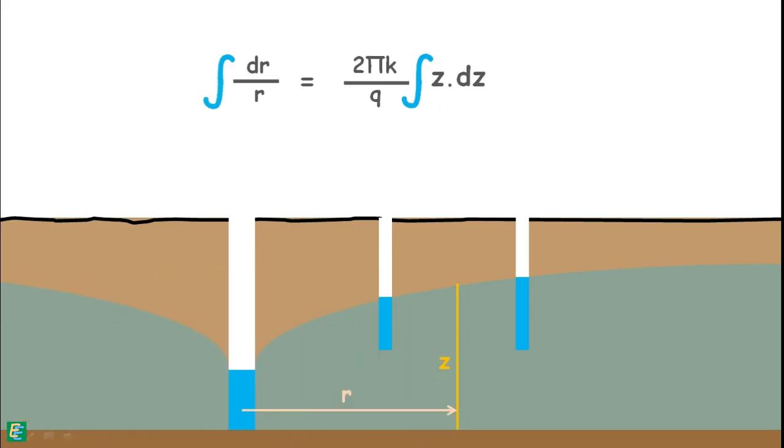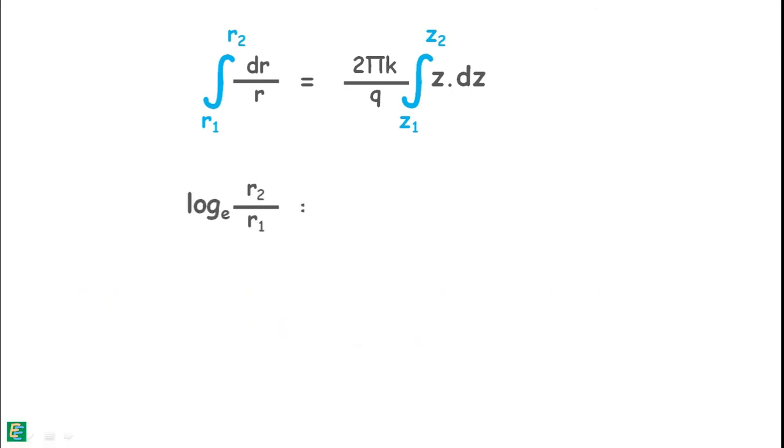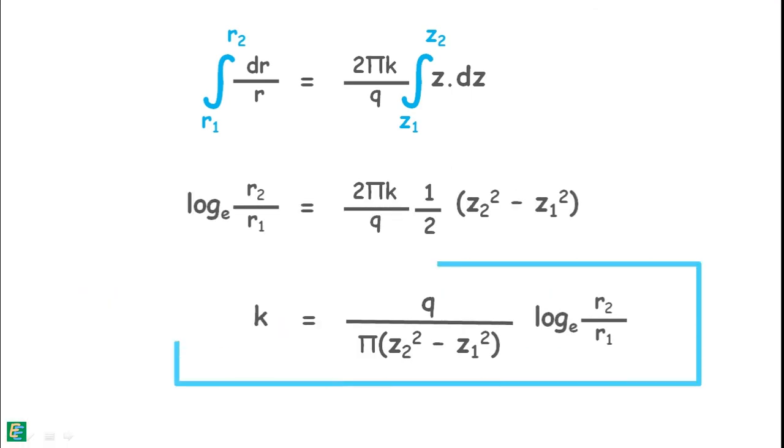Now we can integrate it from our observation of water level in the well which was at r₁ distance from the test well was z₁ and level in the well which was at r₂ distance was z₂. After integrating and applying limits, we can find the equation of permeability of the soil.